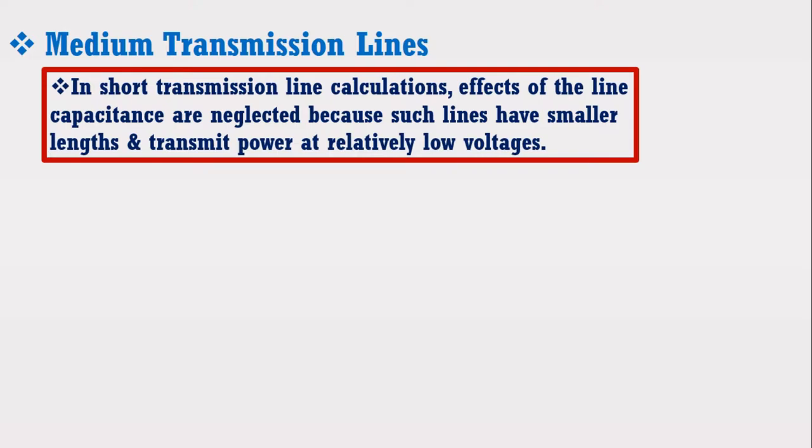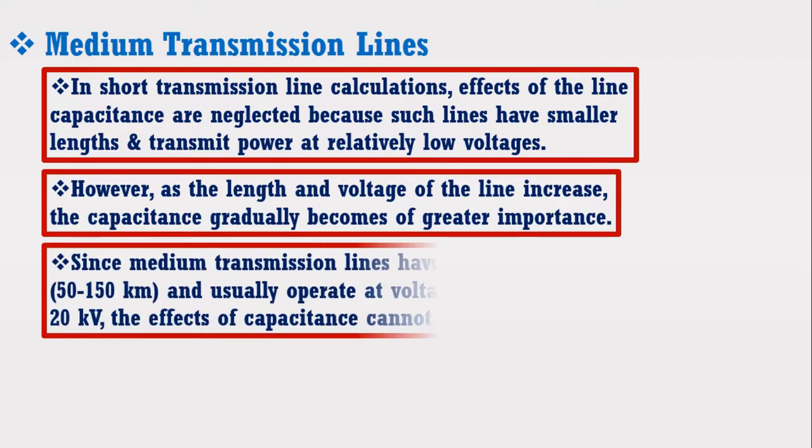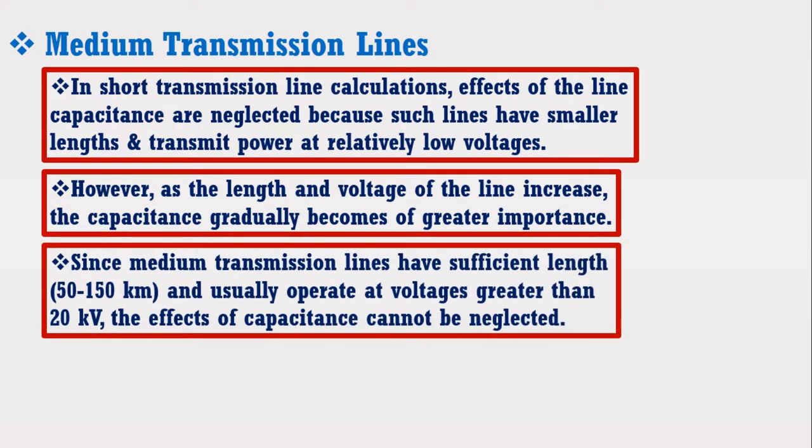However, as the length and voltage of the line increases, the capacitance gradually becomes of greater importance. Since medium transmission lines have sufficient length of almost 50 to 150 km and usually operate at voltage greater than 20 kV, therefore the effects of capacitance cannot be neglected.